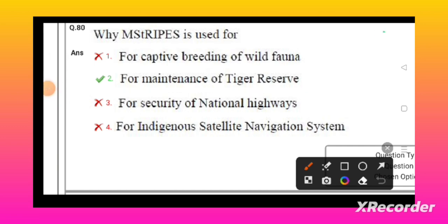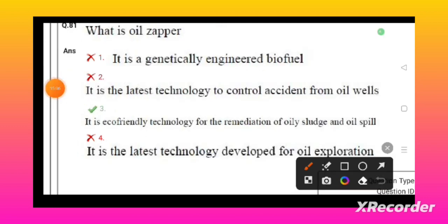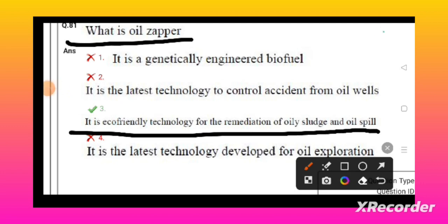What is Oil Zapper? It is the eco-friendly technology for remediation of oil sludge in oil spills. Geiger-Müller tube is a gas ionization detector.